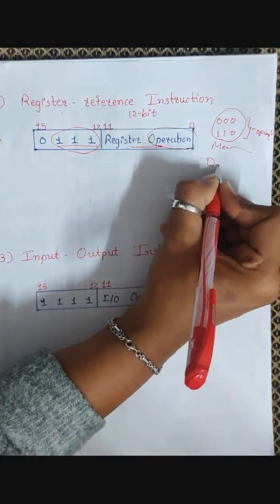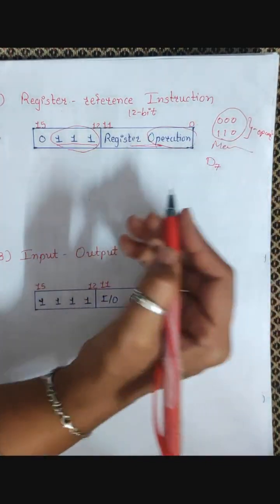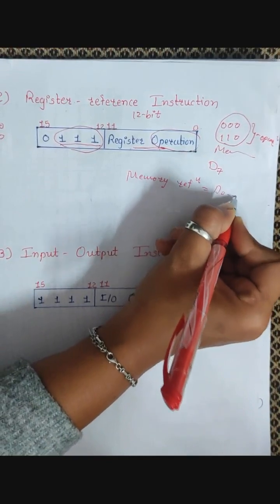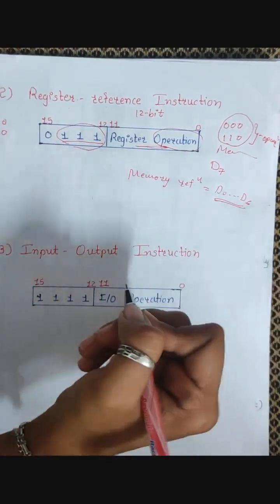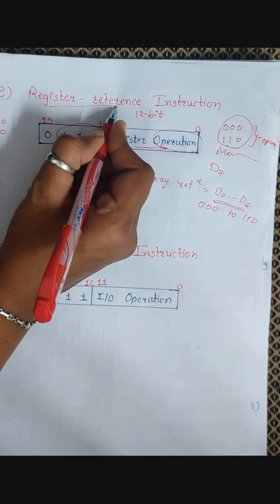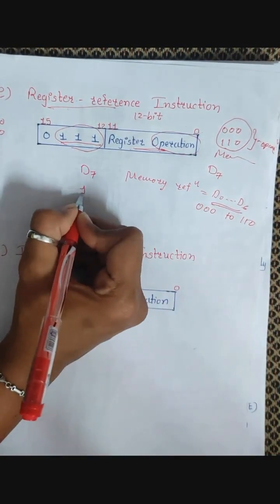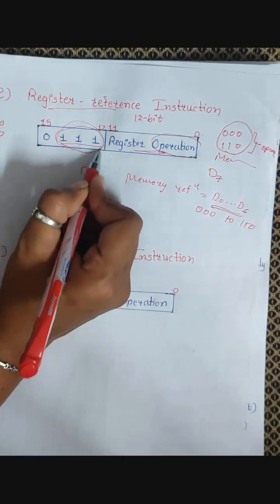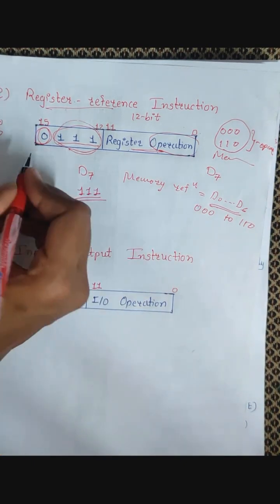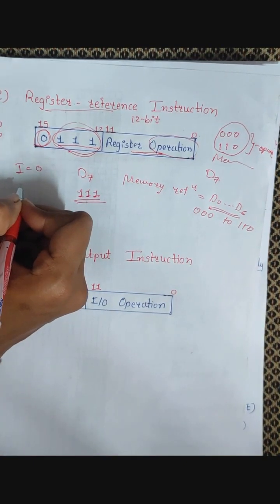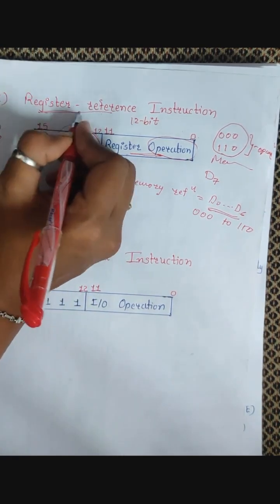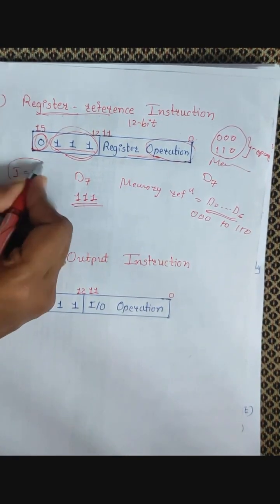The opcode 111 generates the D7 signal. For memory reference instructions, the opcode varies from 000 to 110, generating signals D0 to D6. For register reference and input-output instructions, it generates D7 — meaning bits 12 to 14 are always 111. For register reference instructions specifically, the 15th bit i must be 0. If i is not 0, the processor will not recognize it as a register reference instruction.